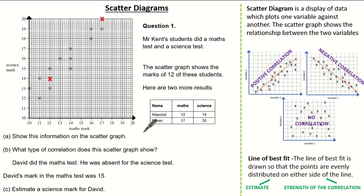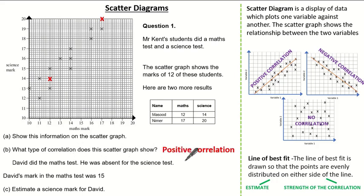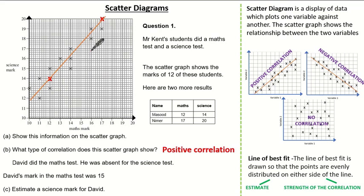The question asks what type of correlation does this scatter graph show. You can see the data points are plotted in this upward direction, just like our positive correlation. The question states David did the maths test and was absent for the science test, and we're asked to predict or estimate — if he got 15 in his maths test, what would he have got in his science test? If we're estimating, we must use our line of best fit. When drawing your line of best fit, try and draw the line so the points are evenly distributed either side. Do it by eye — it doesn't have to be perfect. The examiner does have an allowance for the line of best fit.